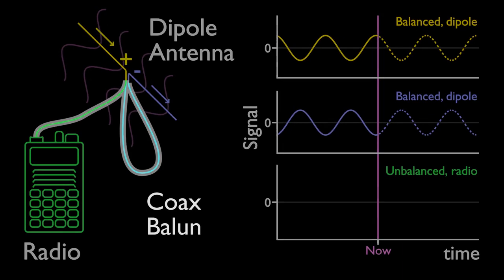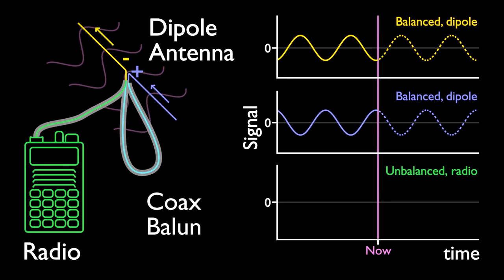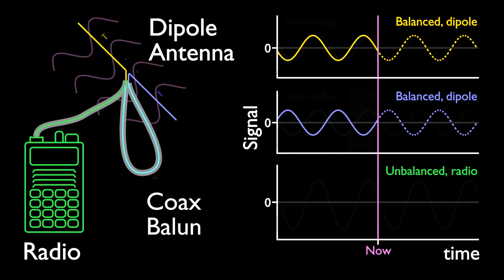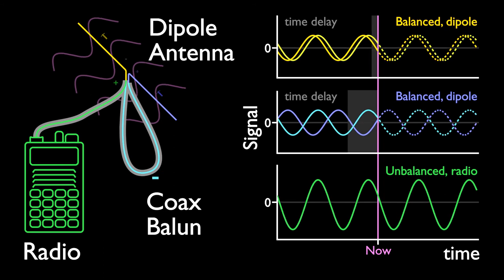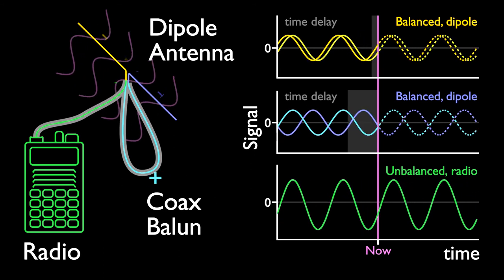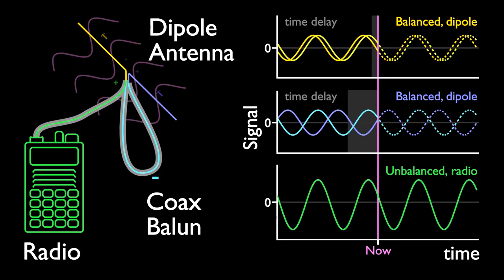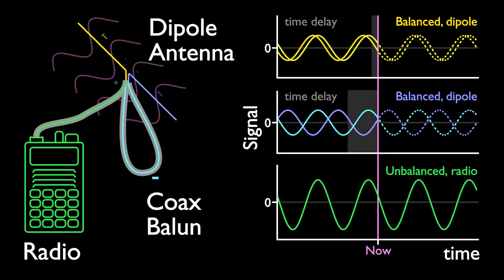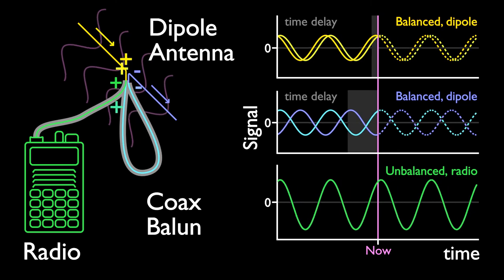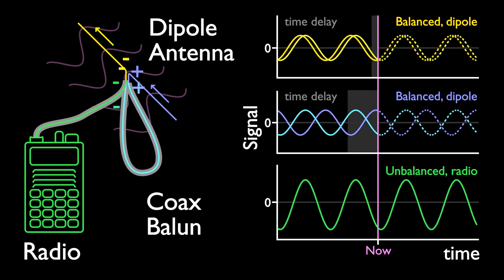In the coax balun, one feedpoint node is connected to the other by a coax cable. If the cable length is set properly, the signal from the first node is delayed exactly so that when it arrives to the other node, both signals are in the matching phase. This matched signal from both nodes is then delivered to the radio.